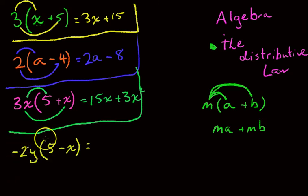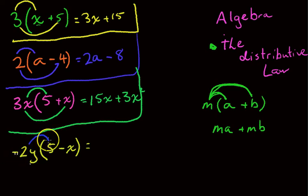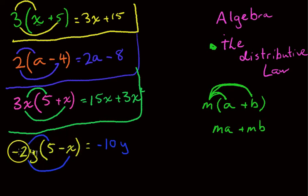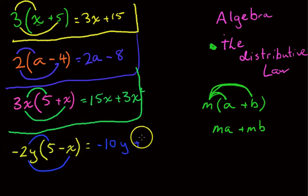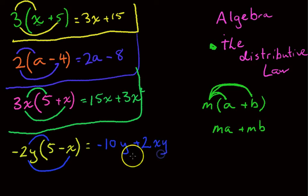Trying to make it as complicated as possible, we've got negative 2y bracket 5 minus x. Same rules. Multiply your first two terms together: negative 2y times 5 will be negative 10y. Then multiply your last terms together: negative 2y times negative x. A minus times a minus is going to be a positive — it's negative 2 times negative 1, so it's just going to be 2, and then y times x. Make sure you write them in alphabetical order: xy.